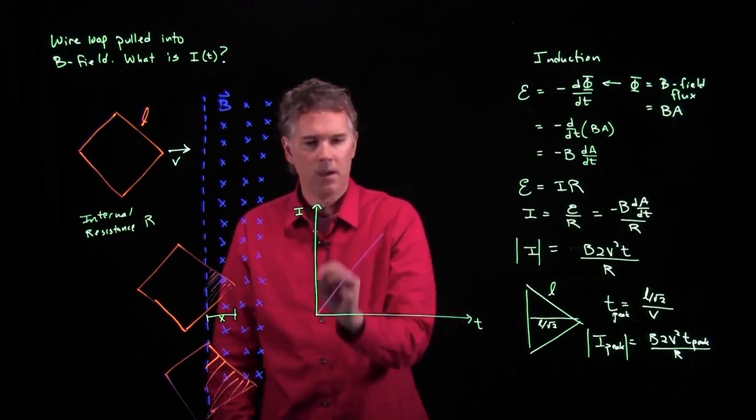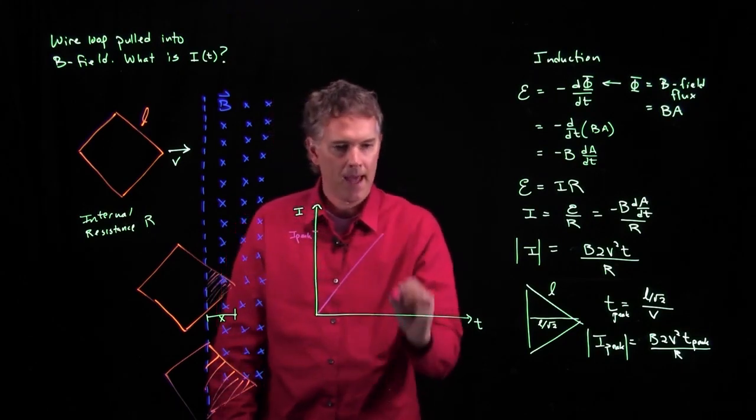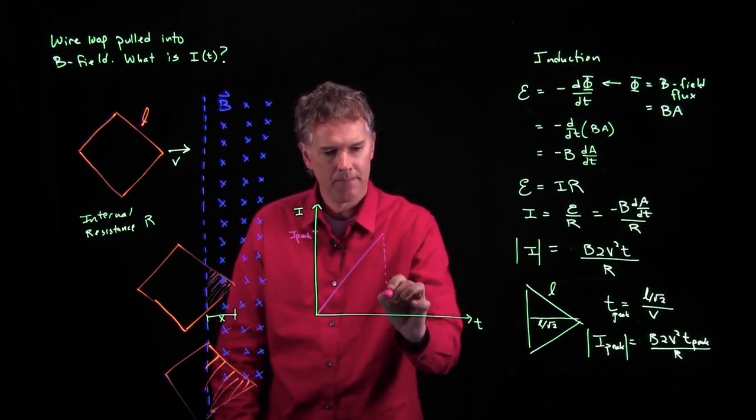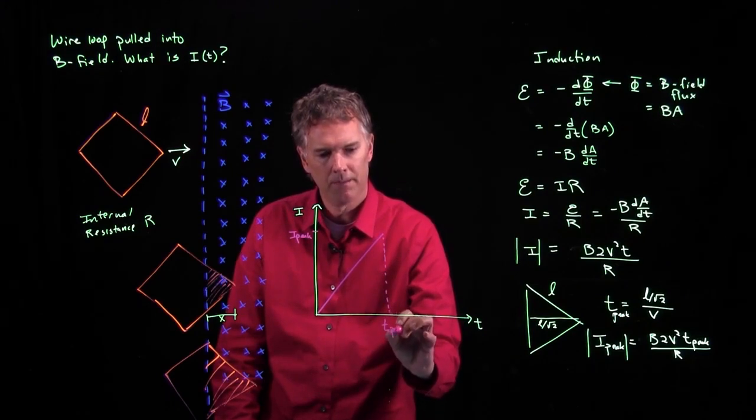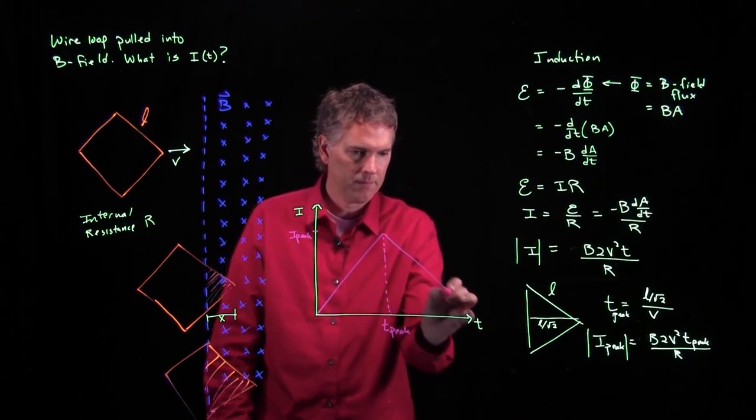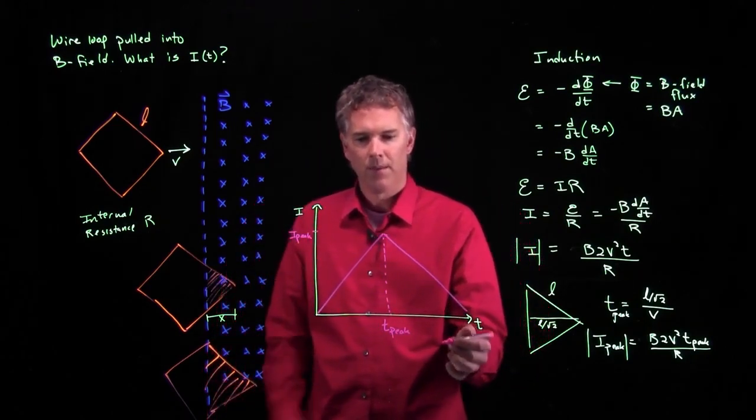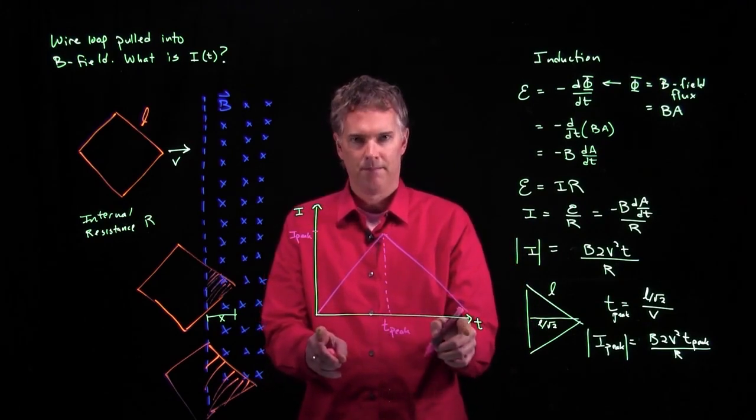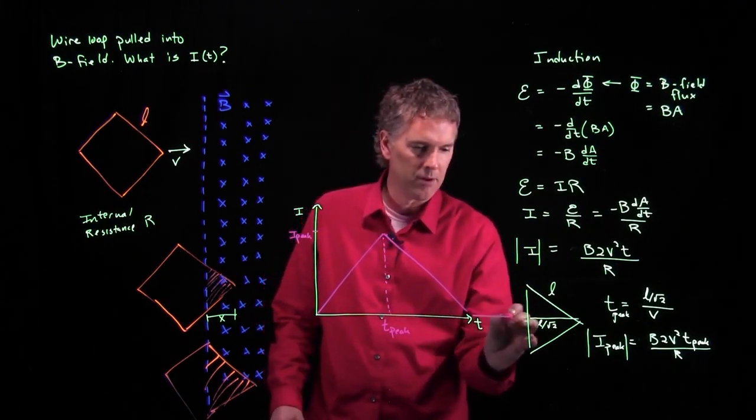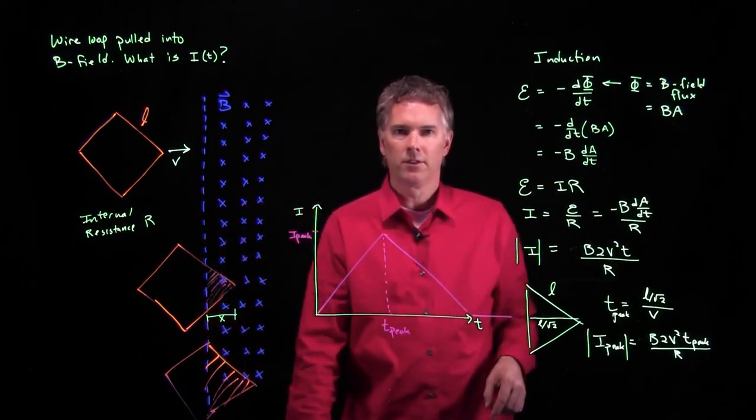And that happens at a time T peak, and then it goes down linearly until it comes back down to zero in the same amount of time. And then it's zero from there on out. So that's what your curve looks like as a function of time.